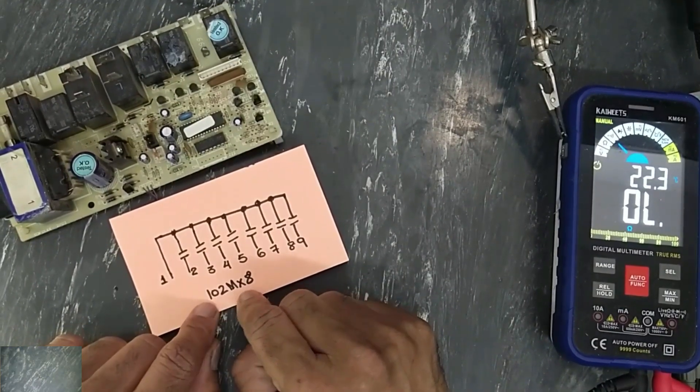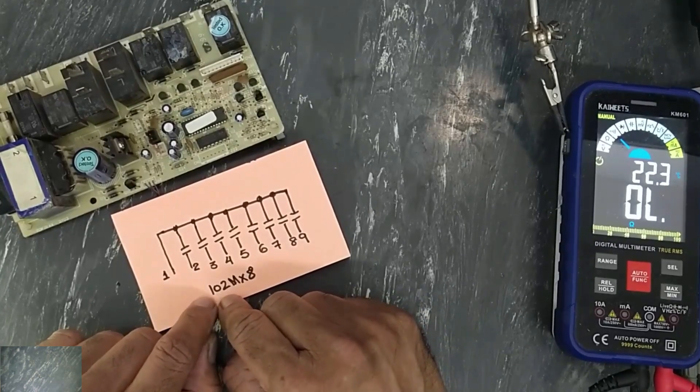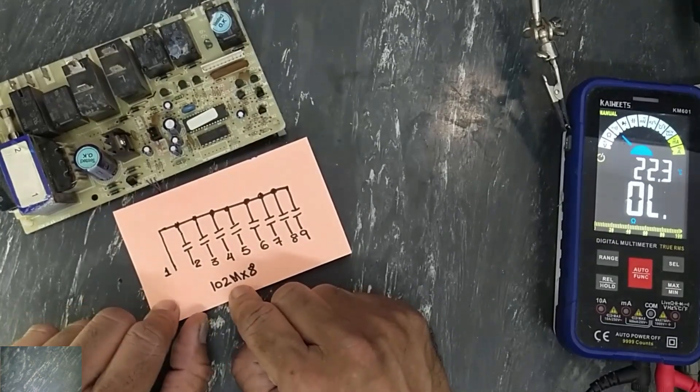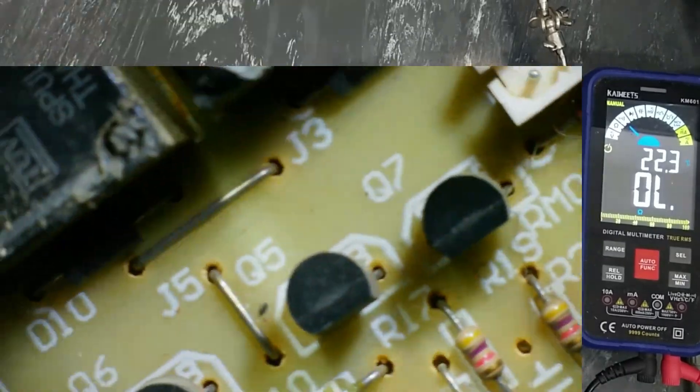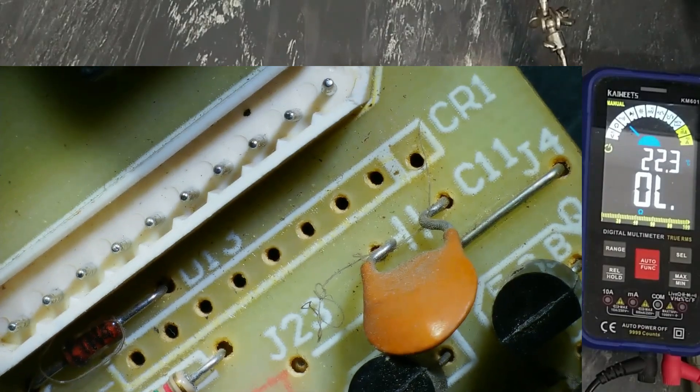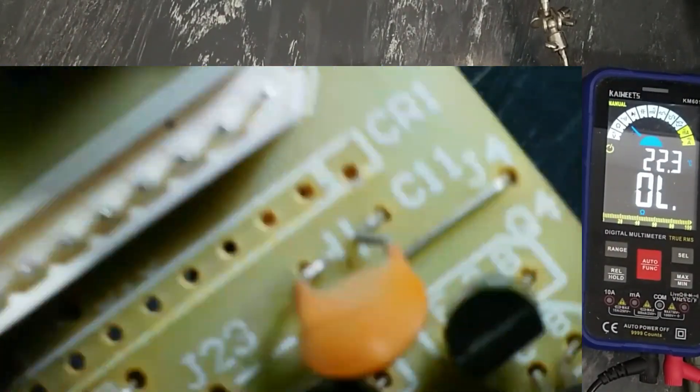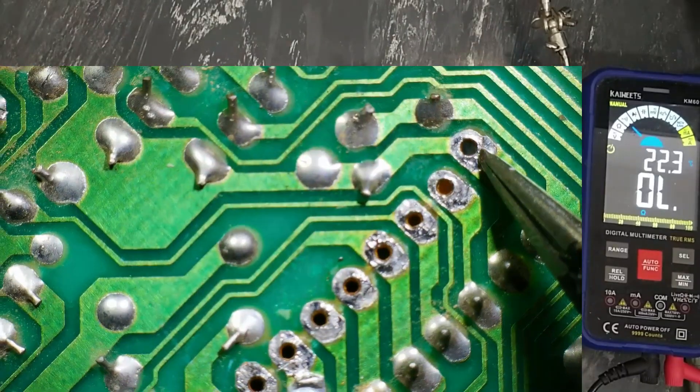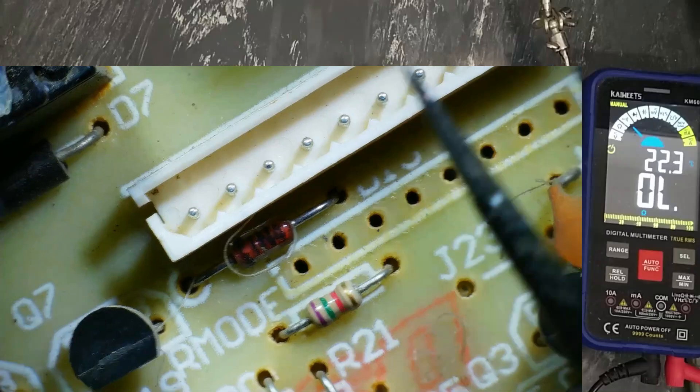x8 that means eight capacitors of value 102, 1000 picofarad, 20 percent. In the left side, pin one. If we check on PCB, pin one is separated by this marking. In the rear side, this pin one is connected to common line. Other capacitors are connected to data lines.